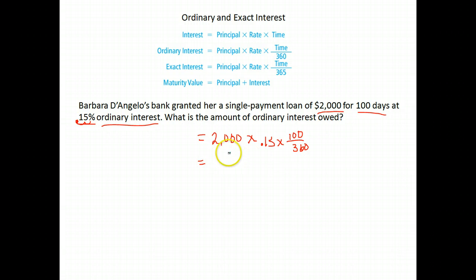Again, that's because it's ordinary interest. We go ahead and multiply that out. 2,000 times 0.15 times 100 divided by 360. When we do that, we get $83.33.